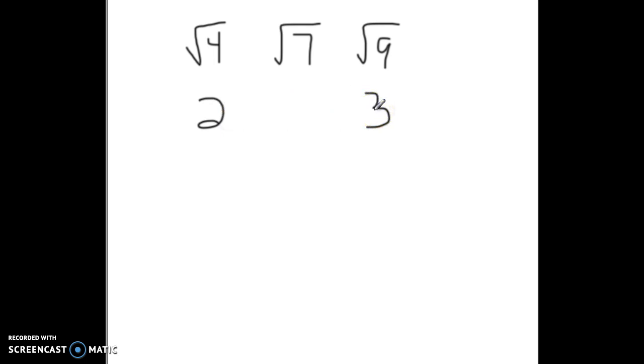So sometimes you'll get questions. It'll simply say, estimate the square root of 7 by telling us what whole numbers it's between. Well, it's between 2 and 3. And sometimes it'll say, I want it to the nearest tenth. Well, when it does that, you have to make a guess.